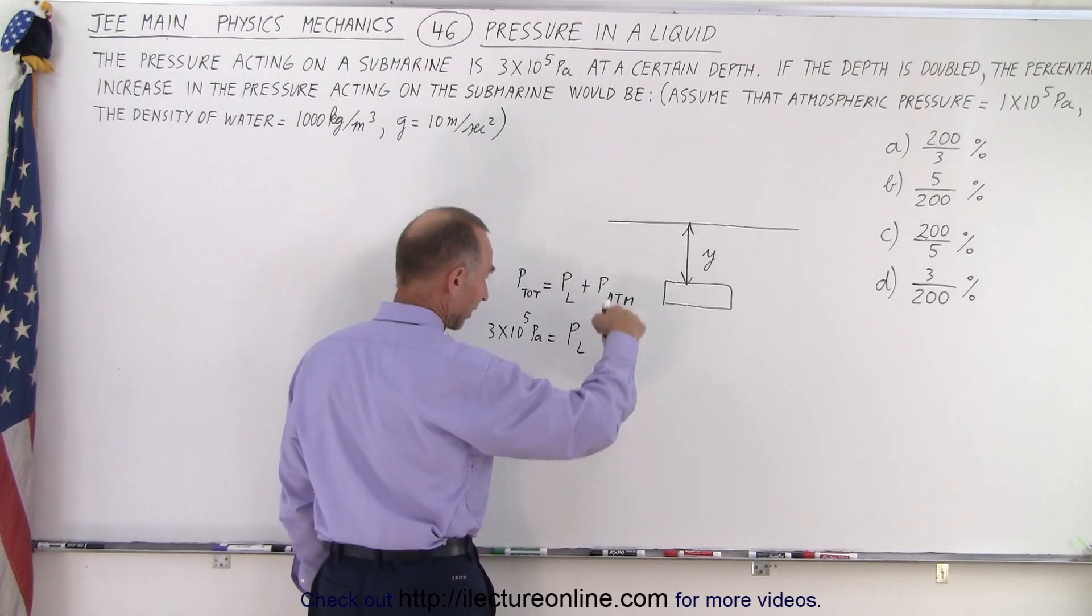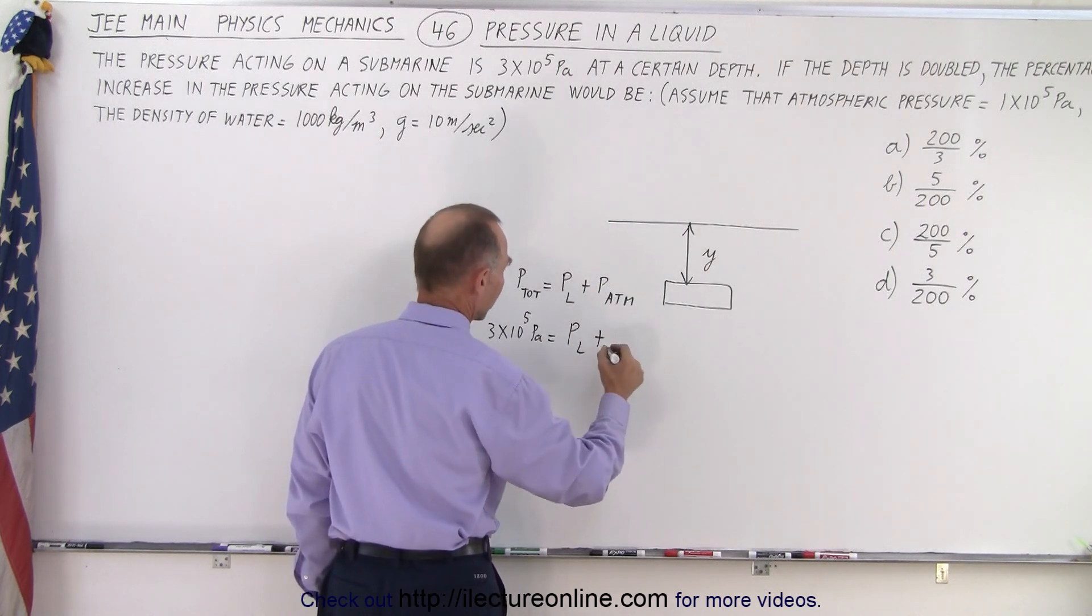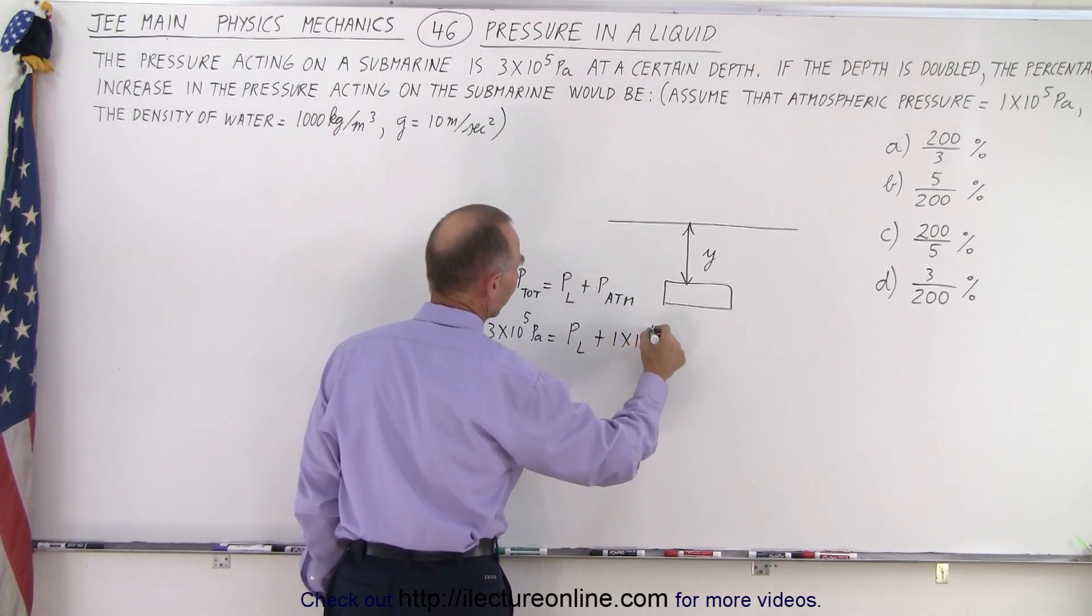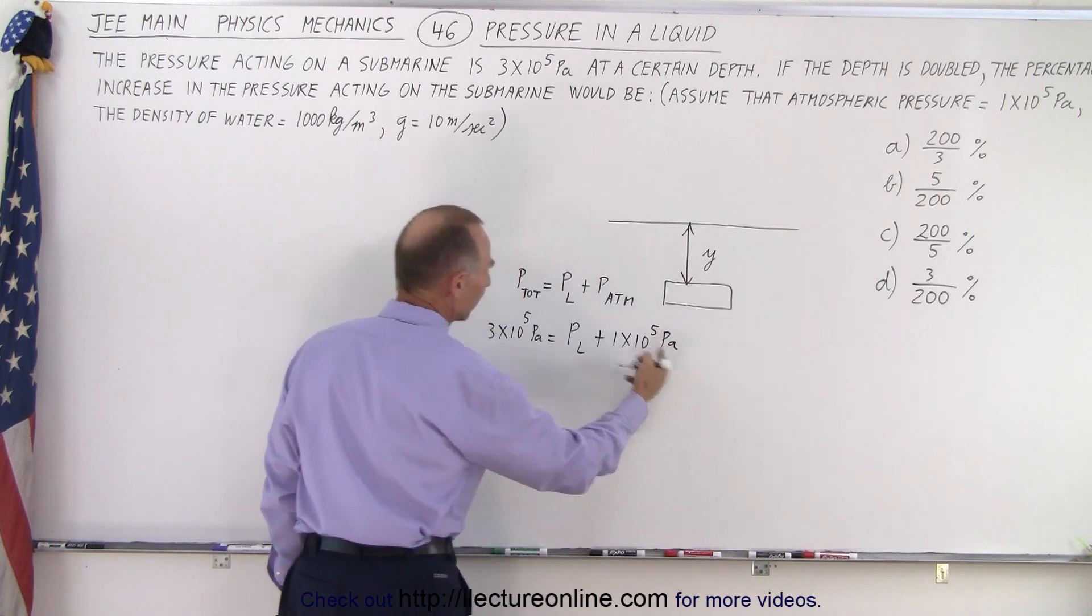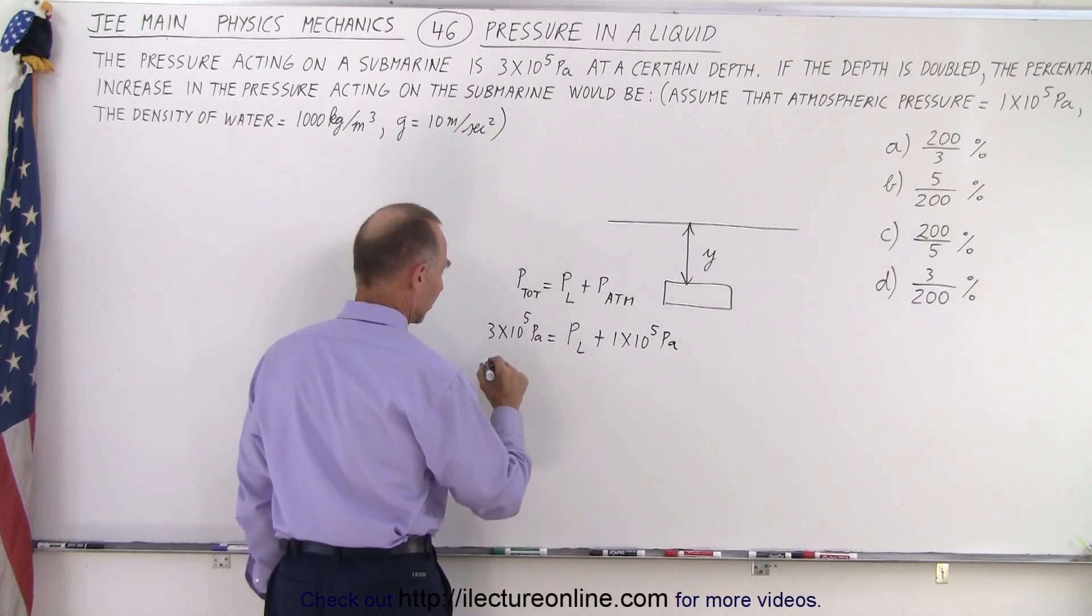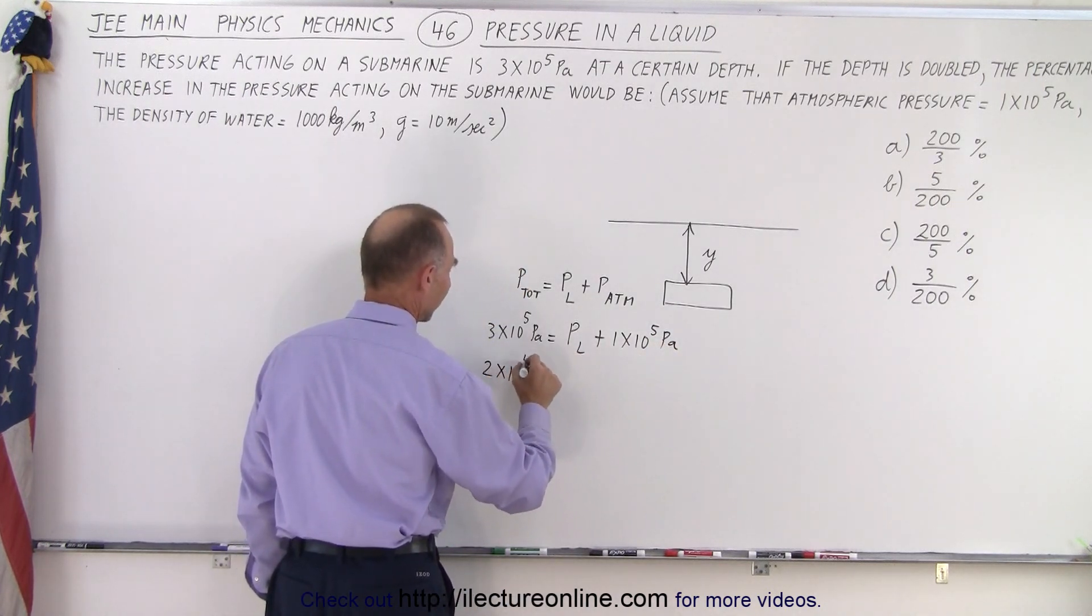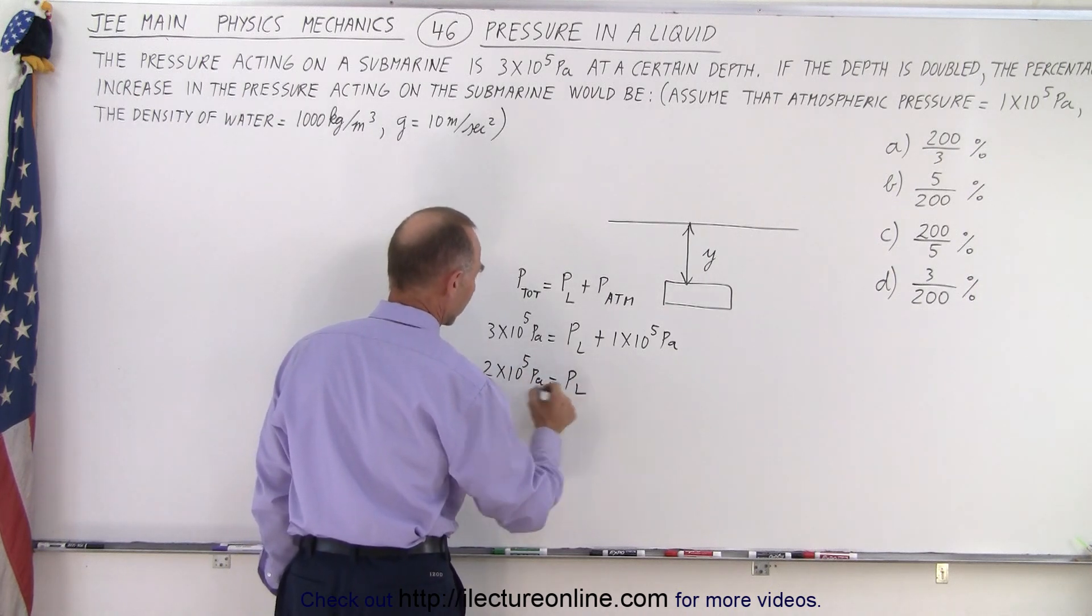If we subtract this from here, we have 2 times 10 to the fifth pascals equals the pressure of the liquid.